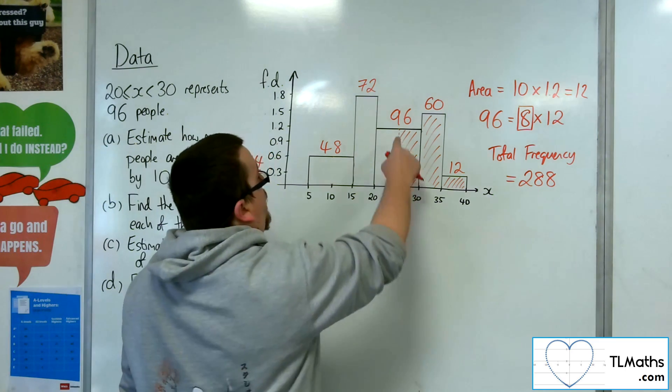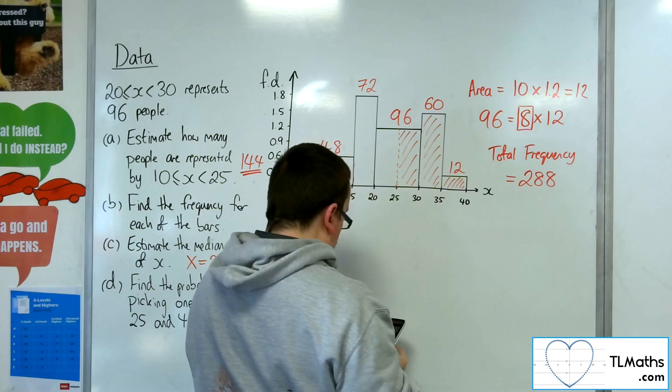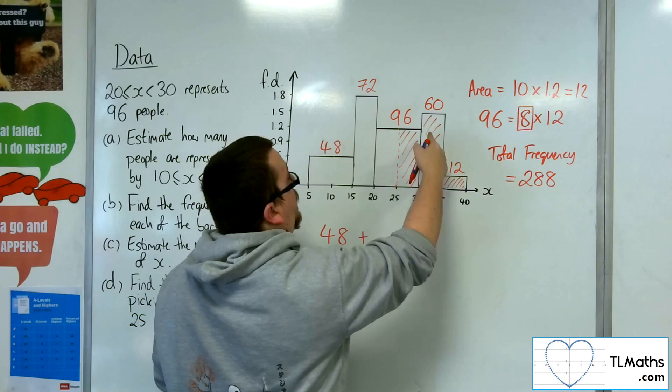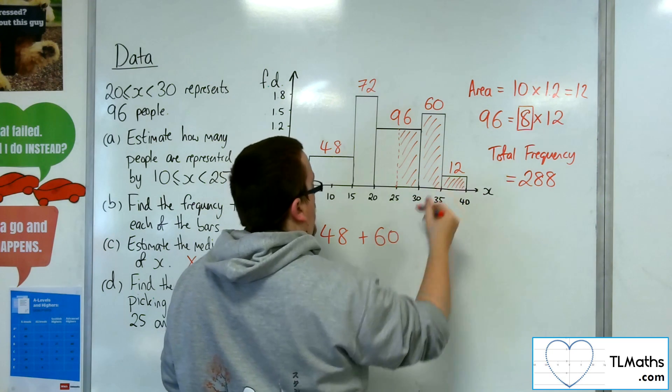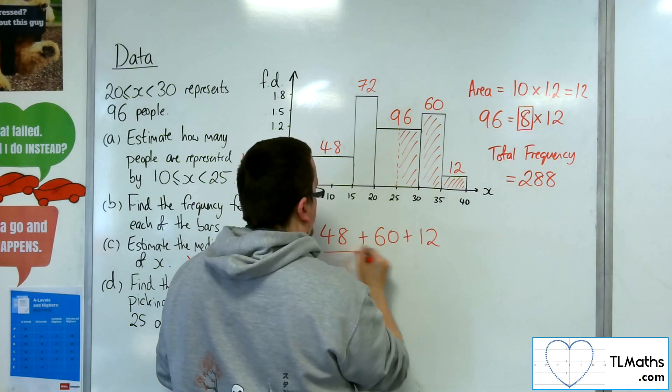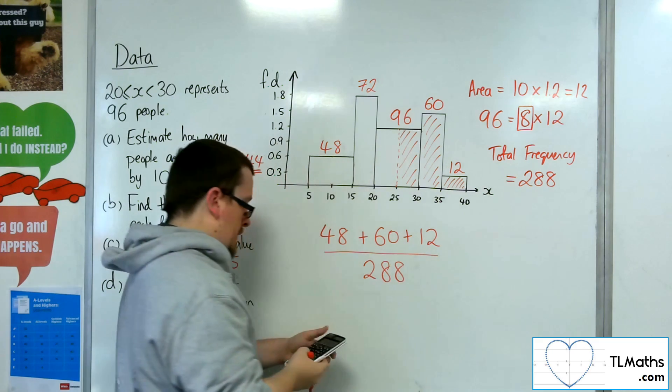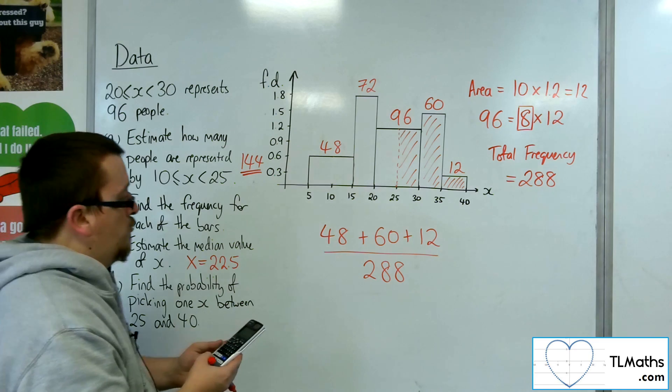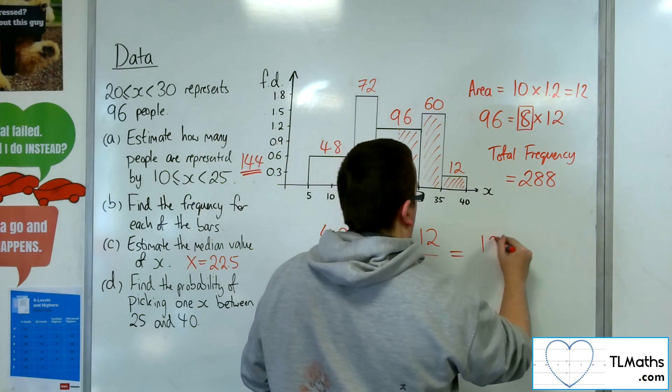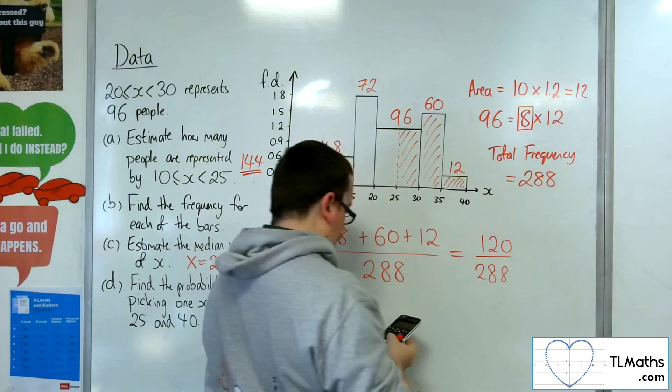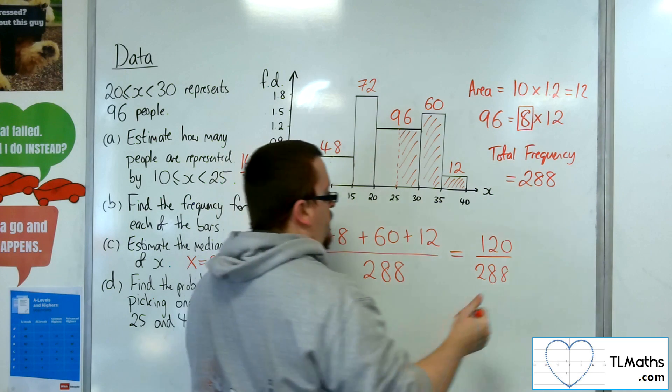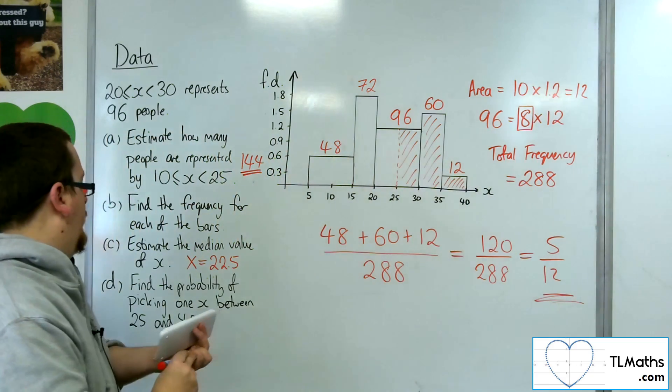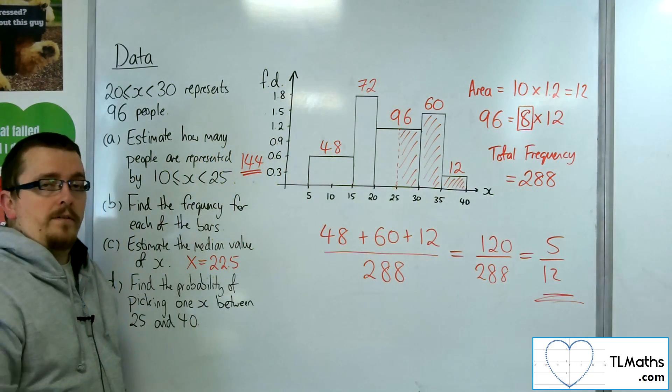So I'm going to have half of the 96 group, so 48, plus all of the 60, plus the 12, and divide that by 288. So 120 over 288, so 5 twelfths. And that is the probability that I'm asked to find.